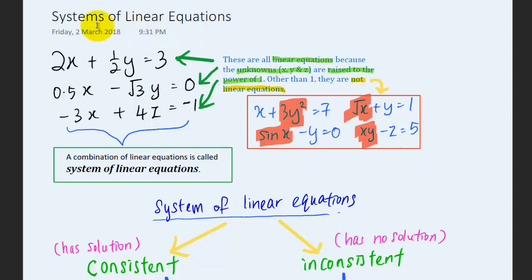In this lesson we will learn about systems of linear equations. These equations are known as linear equations because the unknowns x, y, and z are raised to the power of one. If the power of the unknowns is other than one, they are not linear equations. For example, if y is raised to the power of two, or x is raised to the power of 0.5 (square root), it is not a linear equation.